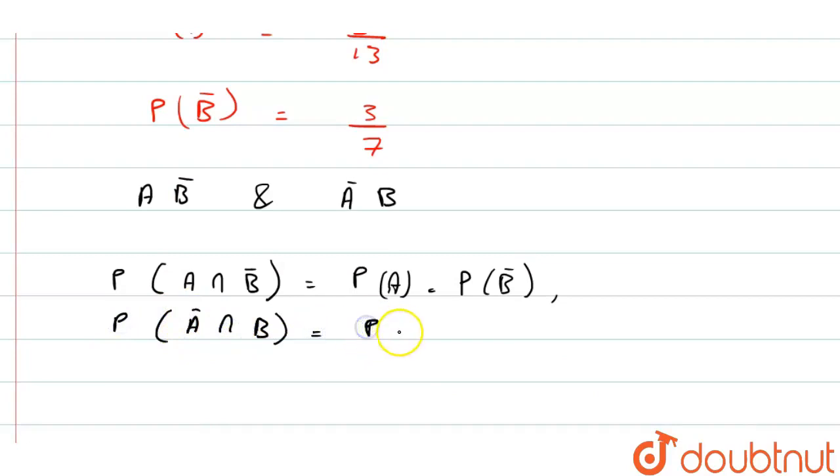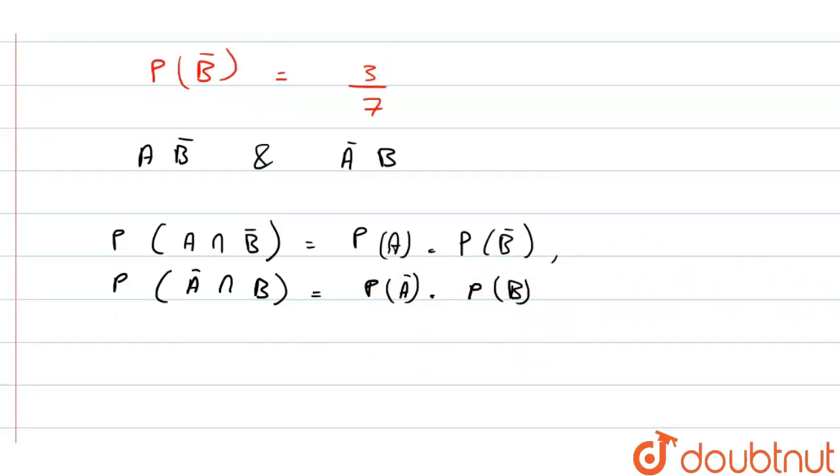So required probability will be P(A ∩ B') union P(A' ∩ B).